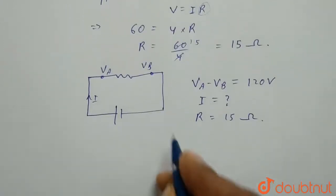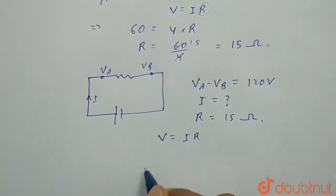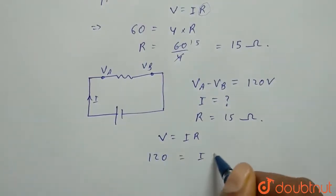So now we will again apply V equals IR. So here V is 120, which equals I times R, R is 15.